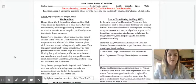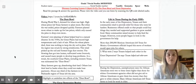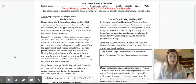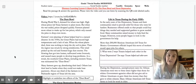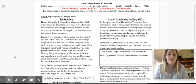Farmers planted more wheat to make up for the low prices, which only caused the price to drop even more. Farmers' over-planting of wheat led to a natural disaster. In the 1930s, the Great Plains had record high temperatures and a lack of rain. When the wheat plants died, there was nothing to keep the dry soil in place. Then the region was struck by strong windstorms. So think about it - you have all this dirt on the ground, nothing holding it there, and then all this wind comes in. What do you think is going to happen to the dirt? This wind picked up the soil and formed huge dust clouds.